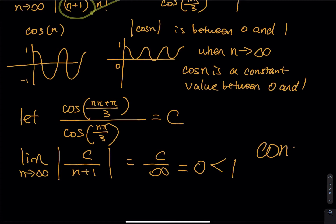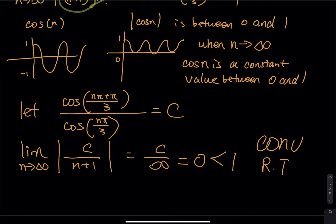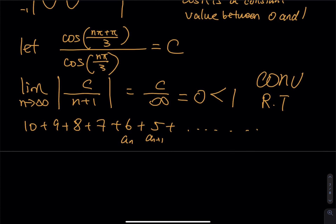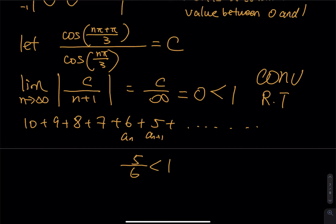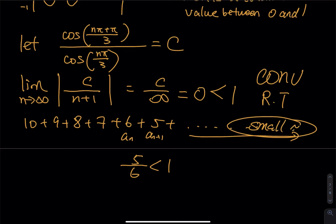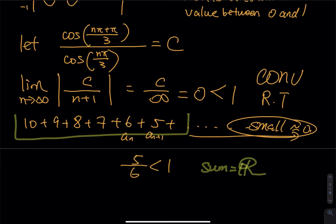As n goes to infinity, c divided by infinity equals zero, and zero is less than 1. So this series is convergent by the ratio test. Ratio less than 1 means the next term is less than the previous term — the series looks like 10, 9, 8, 7, 6, 5 ... The terms to the right are so small, so close to zero, that the sum equals a real number. The series is convergent.